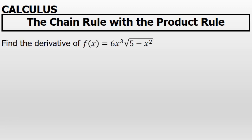Find the derivative of f of x equals 6x to the third times the square root of 5 minus x squared. The first thing to realize is that this problem is the same as 6x to the third times the quantity of 5 minus x squared to the one-half power.